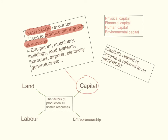There are four categories of capital: physical capital; financial capital — money, stocks and bonds are an example of financial capital; human capital — that's the education and the skills of workers; and environmental capital — good air, clean water, biodiversity — all of this is environmental capital. For its contribution to the production process, capital is rewarded, and the income of capital is referred to as interest.